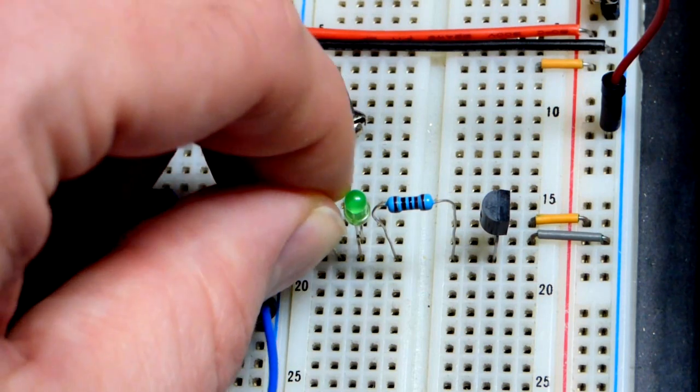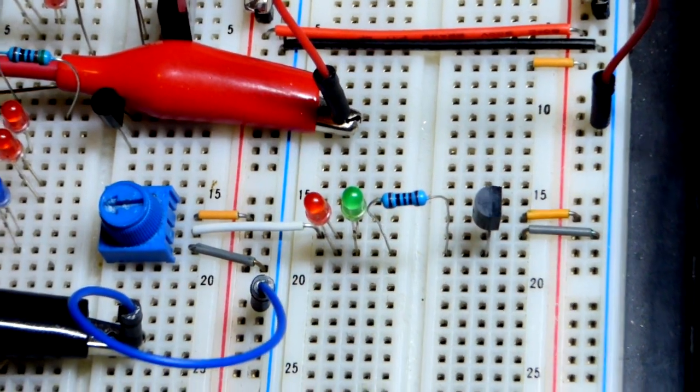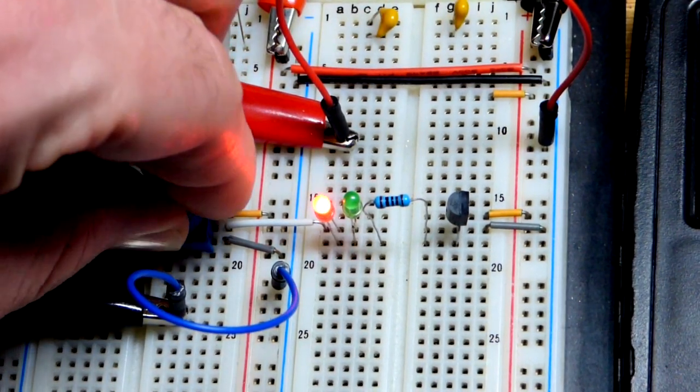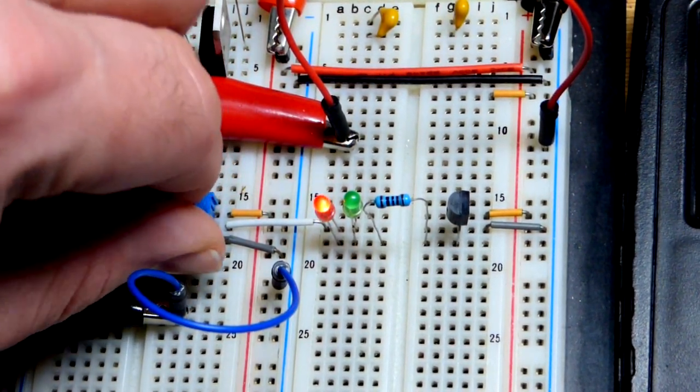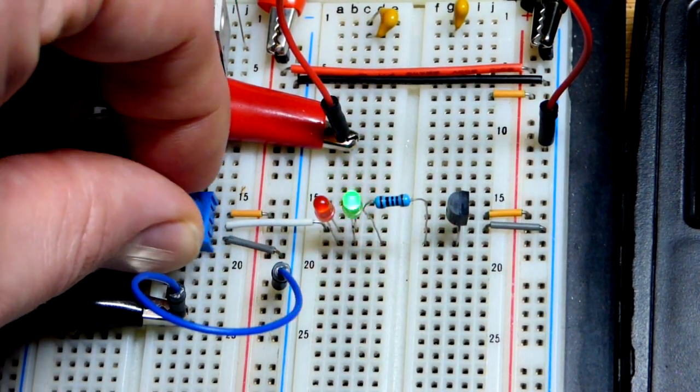And then the opposite - we got the long lead, the anode, to the trim pot. Short lead, the cathode, to our virtual ground. That means the red LED will light up when we have a more positive voltage than ground, and the green LED will light up when we have a more negative voltage than ground.